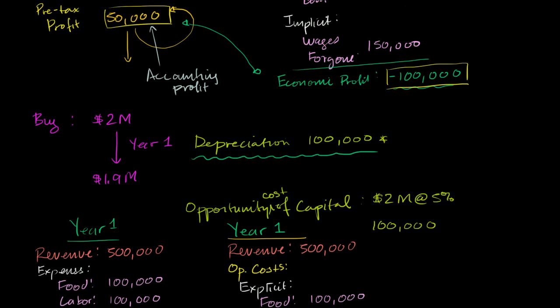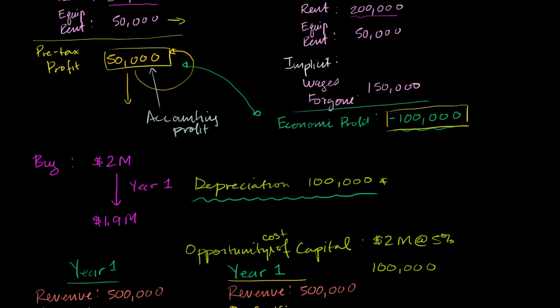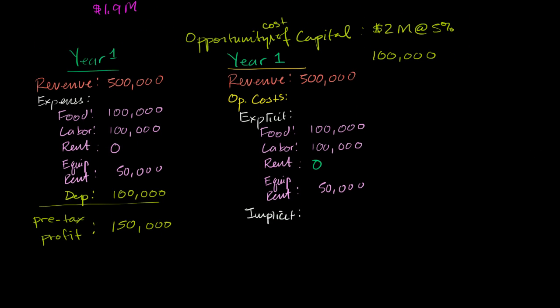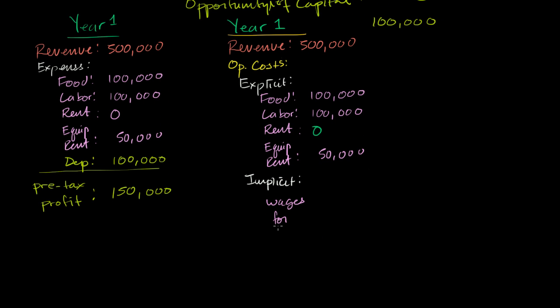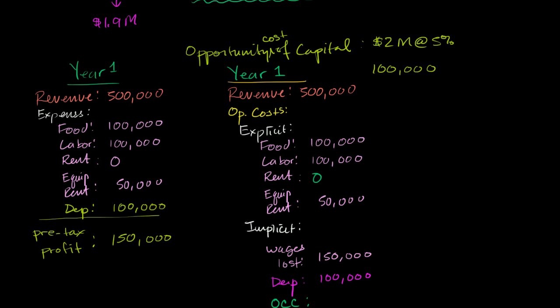We still have the same implicit costs that we had before. We have the wages forgone. We talked about maybe I was a doctor, and I'm not working as a doctor to run this restaurant. So my wages forgone are $150,000. And now we have the depreciation of $100,000. And on top of that, we have the opportunity cost of capital, the return we could have gotten on that $2 million that instead we used to buy the building. So opportunity cost of capital in this situation was 5% of $2 million, another $100,000.